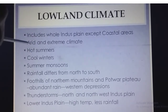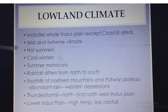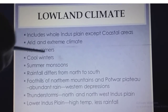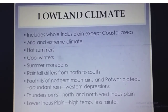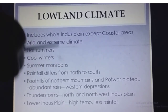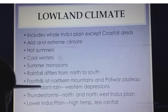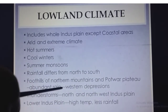The lowland climate includes the whole of the Indus Plain except the coastal areas. Here the climate is arid and extreme — there are hot summers and cool winters. If you have visited Punjab, you must have experienced how hot the summers are and how cool the winters are. The temperatures there are extreme. In Karachi, by contrast, the temperature is moderate: the summers are hot but not as hot as in Punjab, and the winters are cool but not as cool as in Punjab. The summer monsoons bring a lot of rain to the whole of the Indus Plain, and rainfall differs from north to south according to altitude.